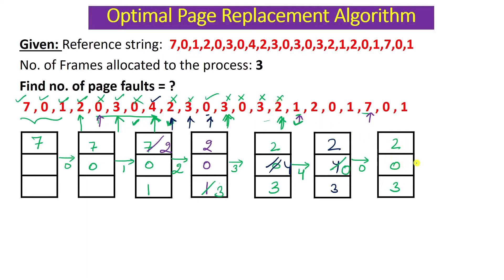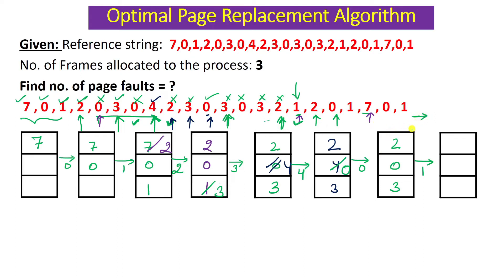Page 1 arrives and generates a page fault. I am currently at 1 and need to replace one of: 2, 0, or 3. Looking ahead: two is here in the future, zero is here in the future, but three is not in the reference string going forward. So three should be replaced. New frame contents: 2, 0, 1. Page 1 generated a page fault.